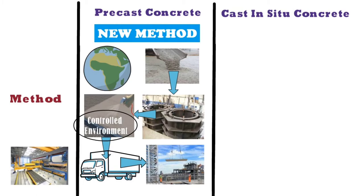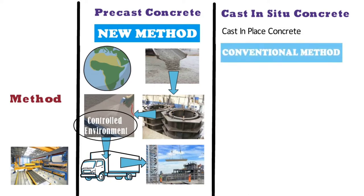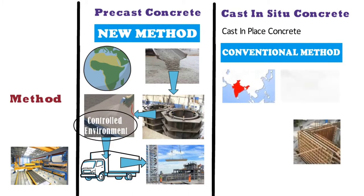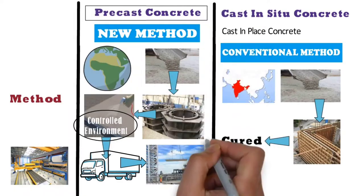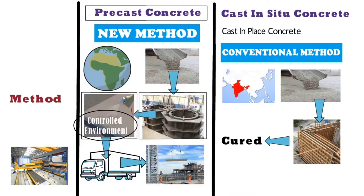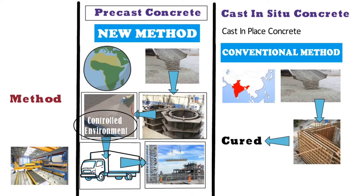Cast in situ concrete, also known as cast in place concrete, is the conventional method of concreting. This method is generally used in India for most projects. In this method, formwork is made at site and liquid concrete is poured in the formwork and then cured. Precast concrete members are cast and cured at the precast plant, then transported to site where only jointing is done. Whereas cast in situ concrete is cast at site and cured at site.